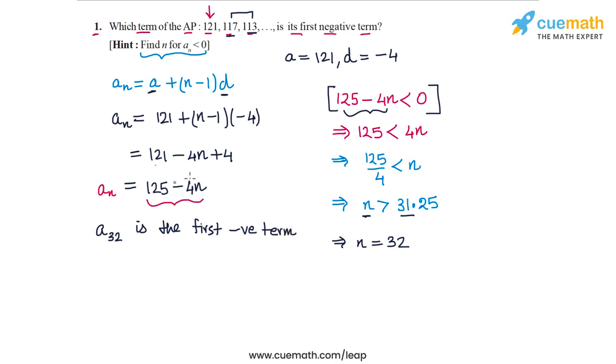And what is the value of this term? The value can be found just by substituting n equal to 32 into this expression. So the first negative term will be 125 minus 4 into 32, or 125 minus 128, which is equal to minus 3. So the first negative term of the arithmetic progression is minus 3 and it occurs at the 32nd position in the AP.